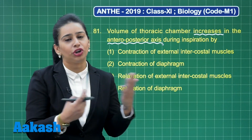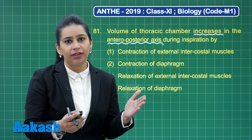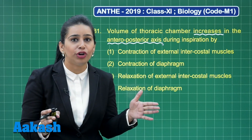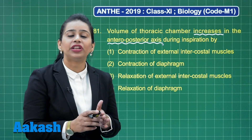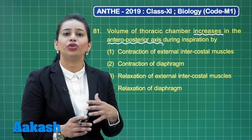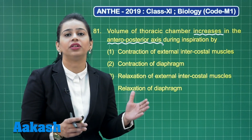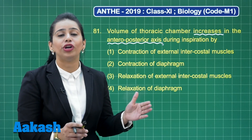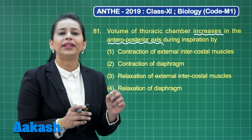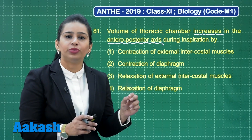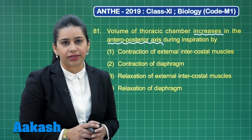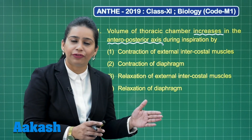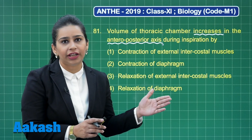During inhalation, air needs to diffuse in from high partial pressure to low partial pressure. Volume is inversely proportional to pressure, so when we need to increase volume, we decrease pressure. The contraction of the diaphragm — the phrenic muscles — increases the volume in the antero-posterior axis, while contraction of the rib muscles increases volume at the dorso-ventral axis.